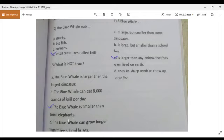Number C, blue whales can grow longer than three school buses. This is also true sentence. So, correct answer is only number C.